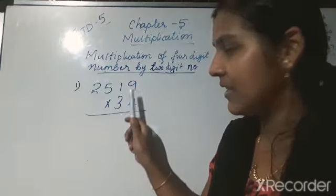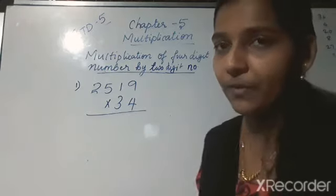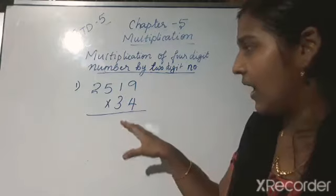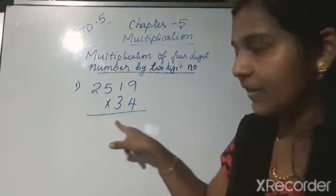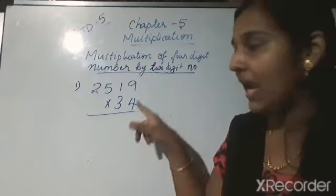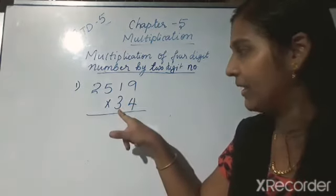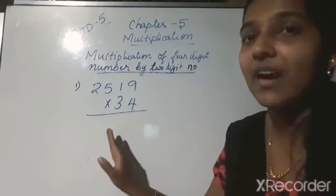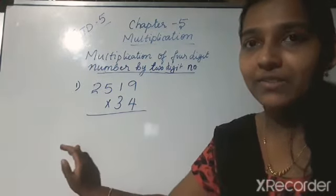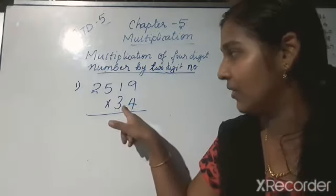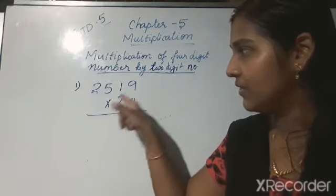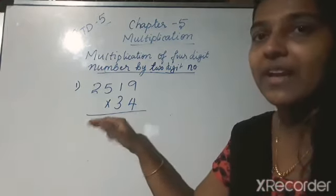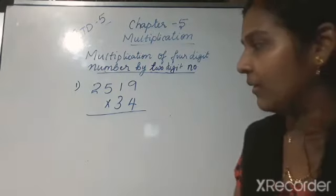Here we are multiplying a 4-digit number by a 2-digit number, and here it is 34. To answer this question, you should know the table of 3 as well as the table of 4. First, multiply this 4-digit number by 4 and write the result in the first step. Then multiply 2,519 by 3 and write just below the first product. Remember: leave one space digit and start from the tens place. After getting both products, add them together to get the final answer.